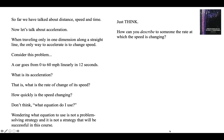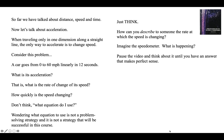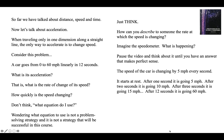You have to think about what's going on. How can you describe to somebody the rate at which the speed is changing? Zero to 60 miles an hour in 12 seconds — imagine the speedometer, digital or analog, the needle going up smoothly, rotating clockwise. You should pause the video and think about it until you have an answer that makes perfect sense. The speed of the car is changing by 5 miles per hour each second. That's the acceleration. It starts at rest; after 1 second it's going 5 miles an hour, after 2 seconds 10, after 3 seconds 15, and after 12 seconds it's going 60 miles an hour. The acceleration is 5 miles per hour per second.